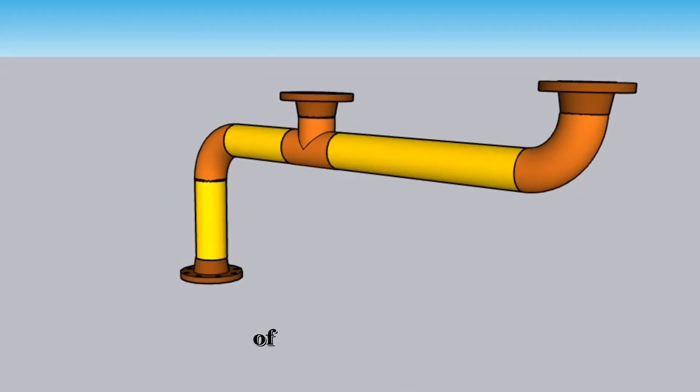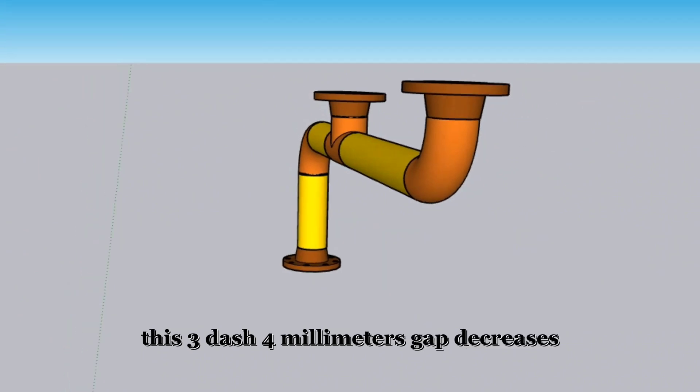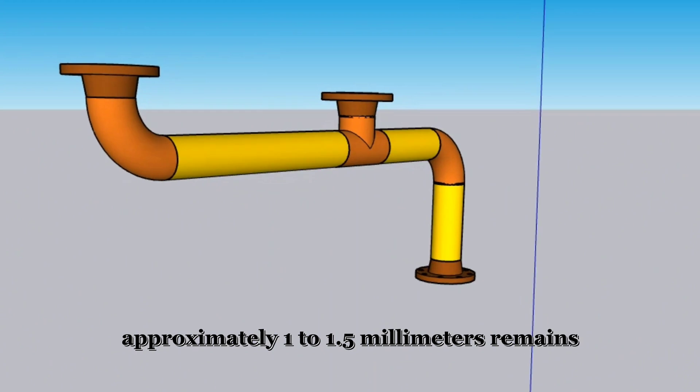Depending on the thickness of the wall of the pipe fittings, this 3-4 mm gap decreases after welding. Approximately 1 to 1.5 mm remains.